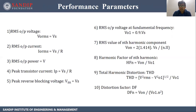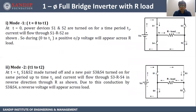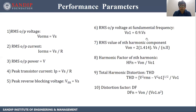Eighth parameter: harmonic factor of the nth harmonic, HF_N = V0N / V01. Ninth parameter: total harmonic distortion THD = √(Vs_rms² − V01²) / V01. Next, distortion factor DF_N = V0N / (V01 × N²). These parameter values are for the single phase full bridge inverter with resistive load.